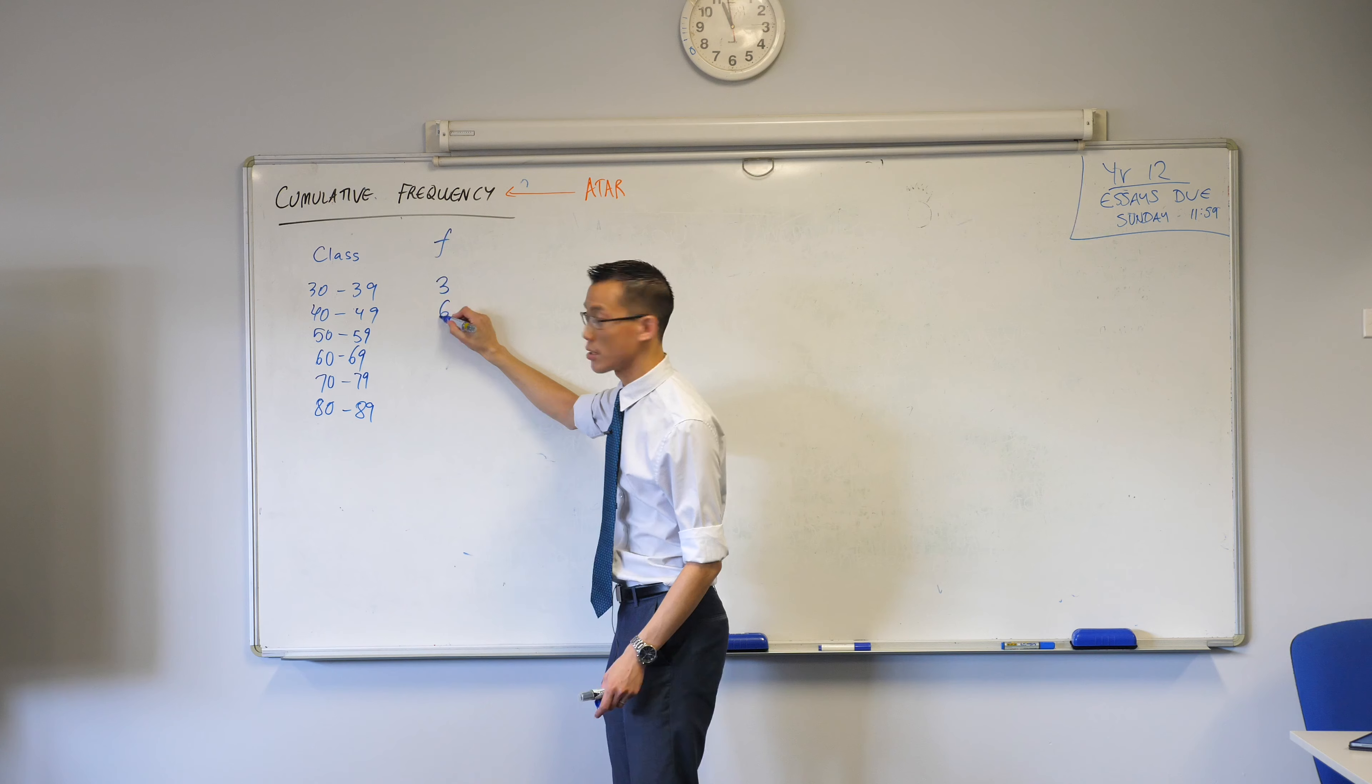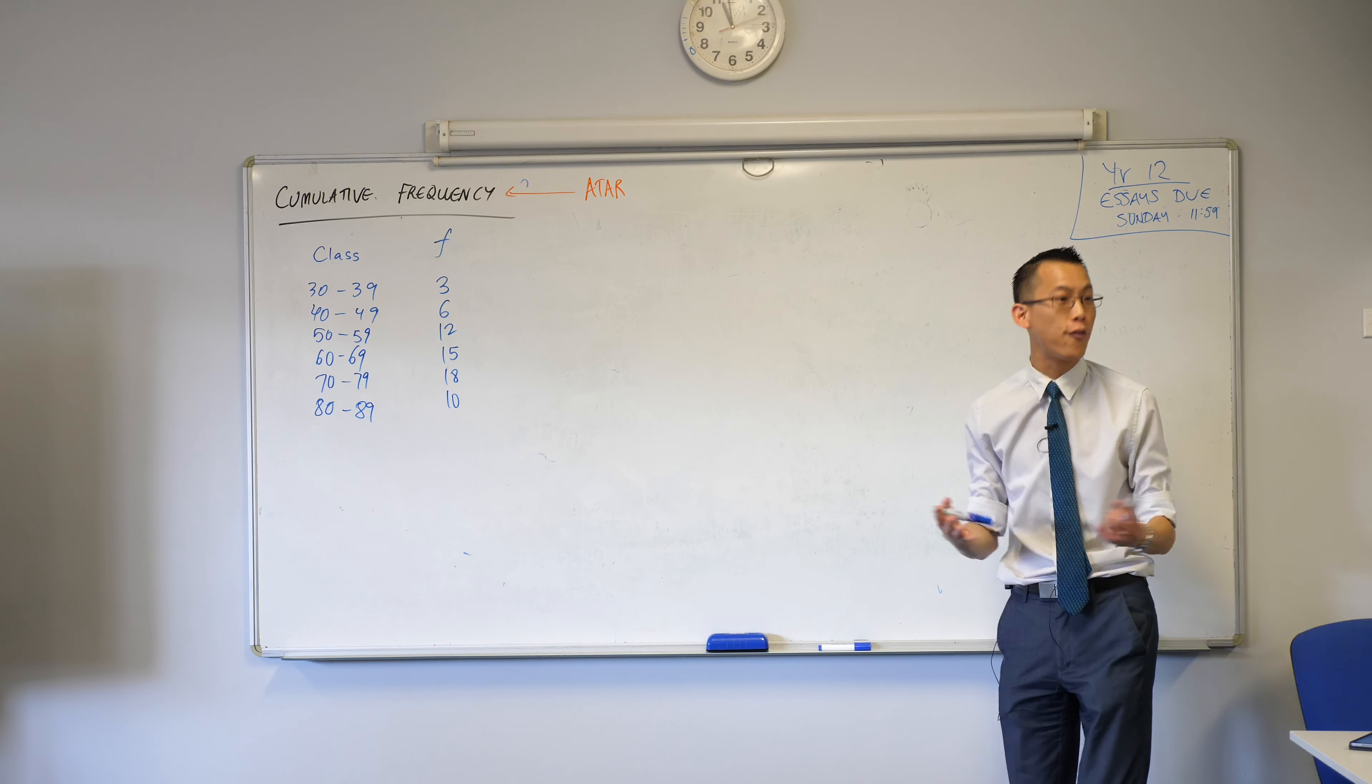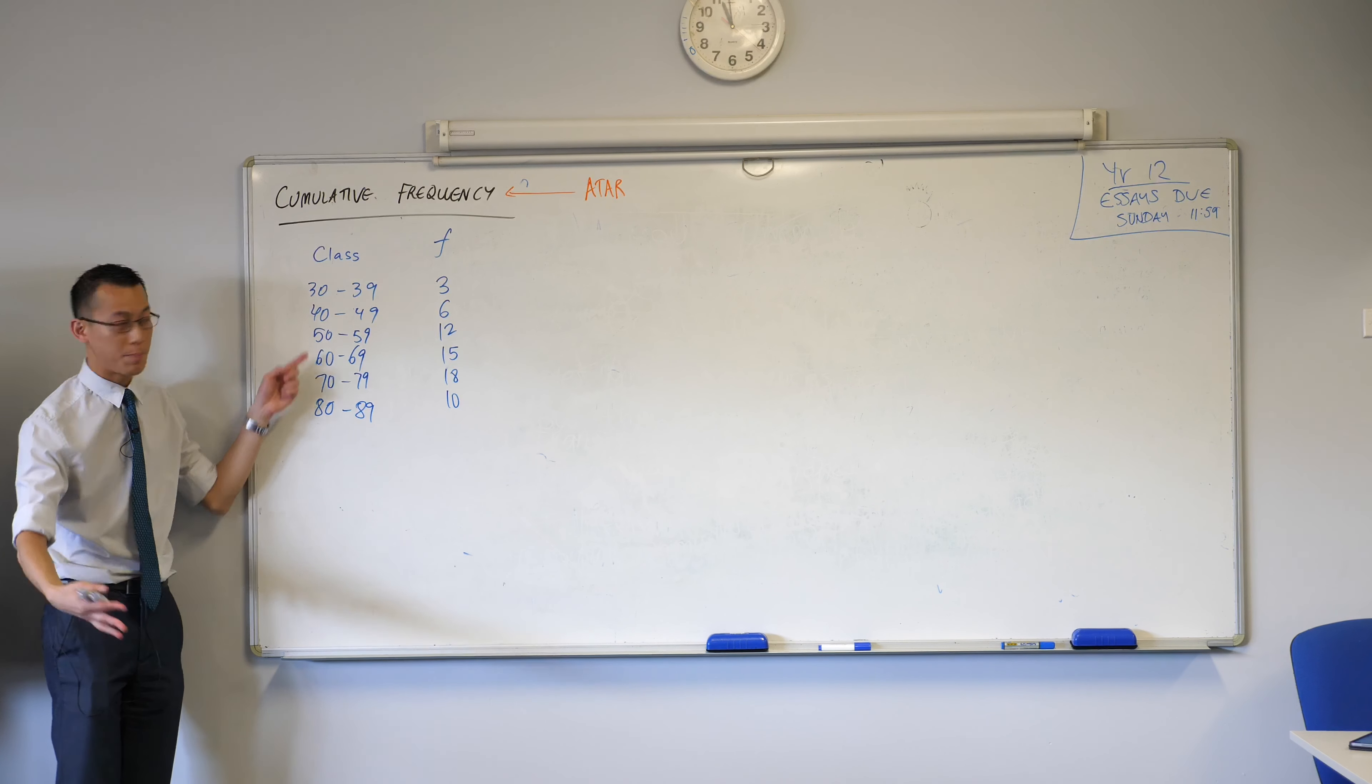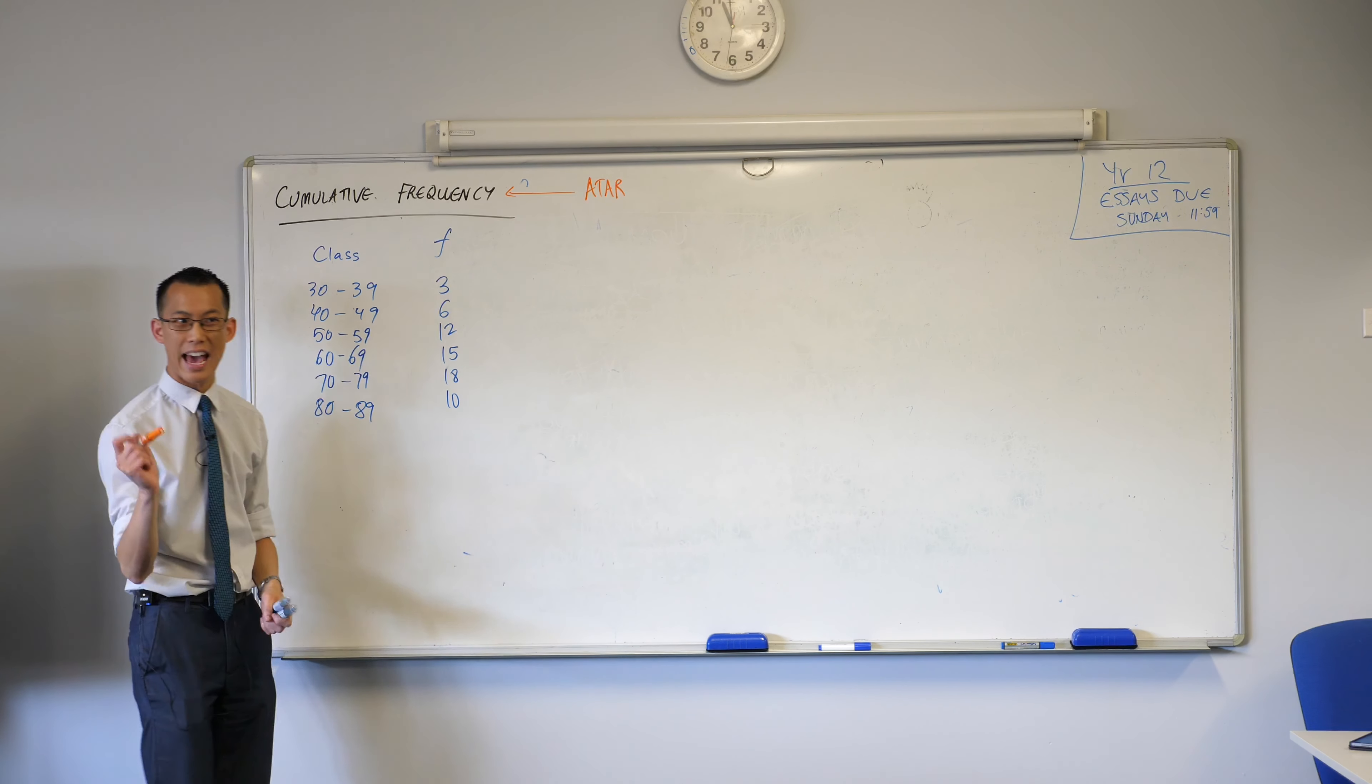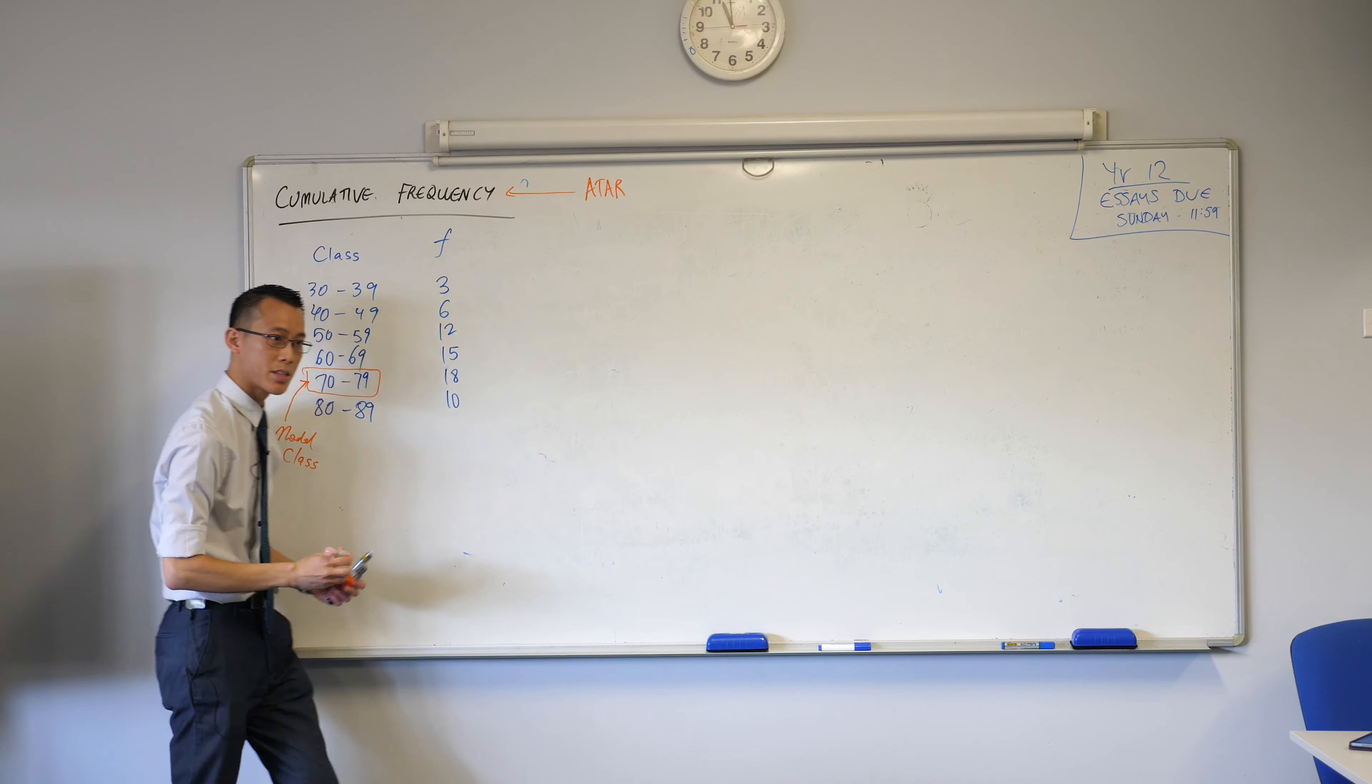Three, six, twelve, fifteen, eighteen, ten. We've got our frequencies there. So you could immediately tell me what's the mode? The mode in this case is what we call a modal class because these are all classes. The mode's a single value, so I'd love you all to label with me: 70 to 79, we don't just call it the mode, we call this the modal class. Label that on, that's important.